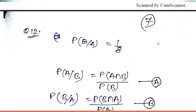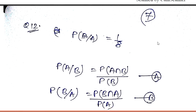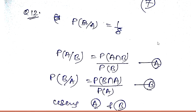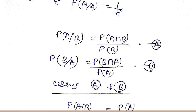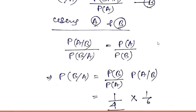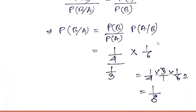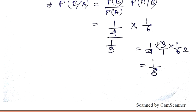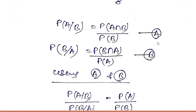Question number twelve: probability of B given A is 1/8. Using the formula probability of A given B equals probability of A intersection B divided by probability of B, and combining with the given equations, we find the probability of B given A equals 1/8.